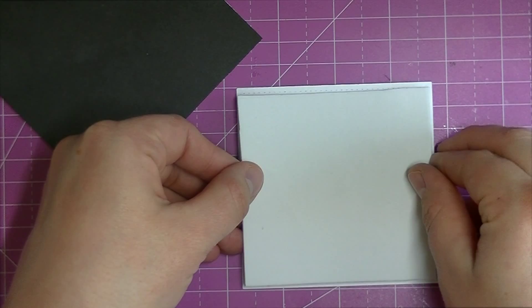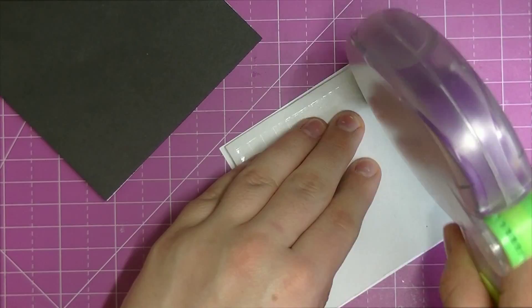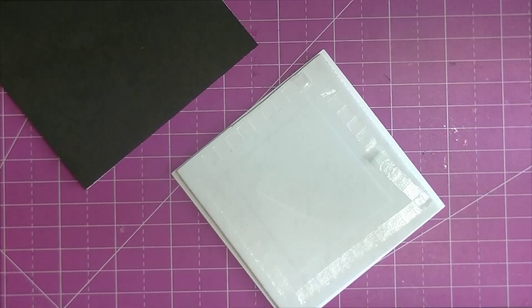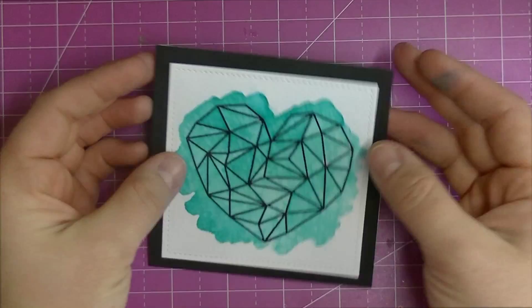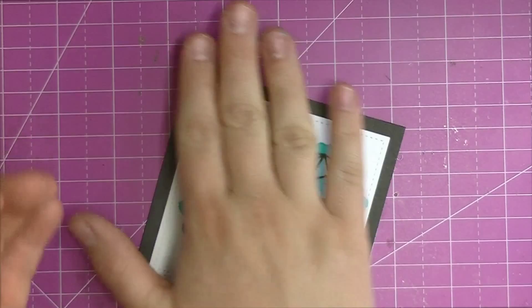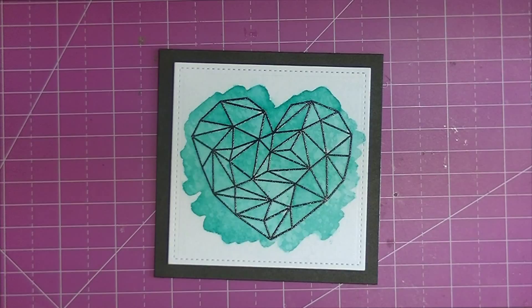Next I cut a piece of craft foam to fit behind the watercolor panel. I used my Permatac Glue Glider Pro and applied that on the back of it. Then I adhered that to a piece of black cardstock that I had cut to 4x4, just lining that up good.